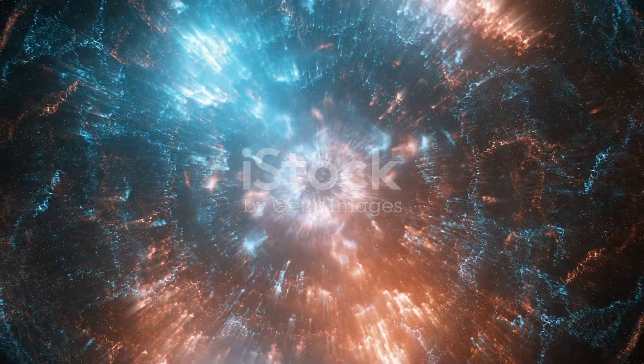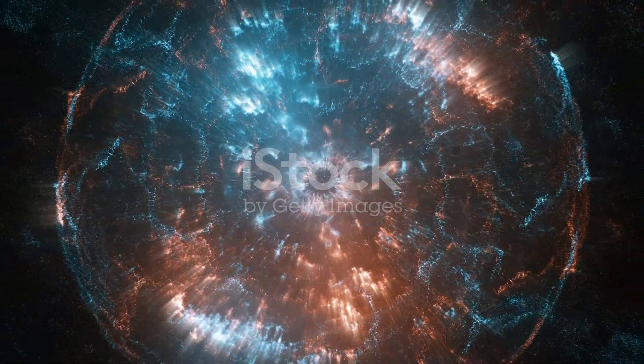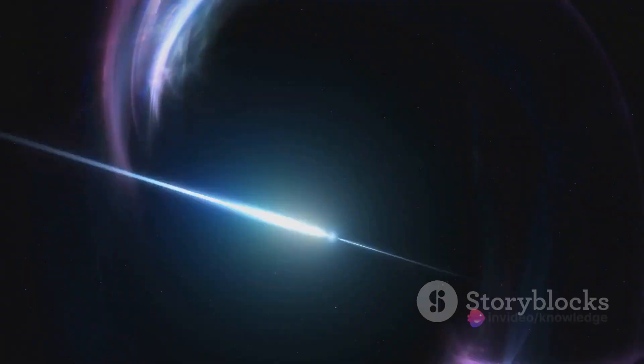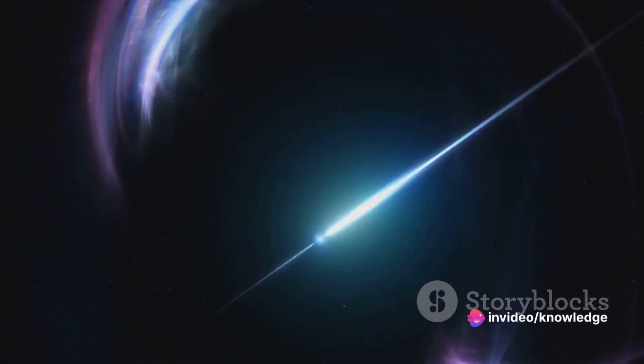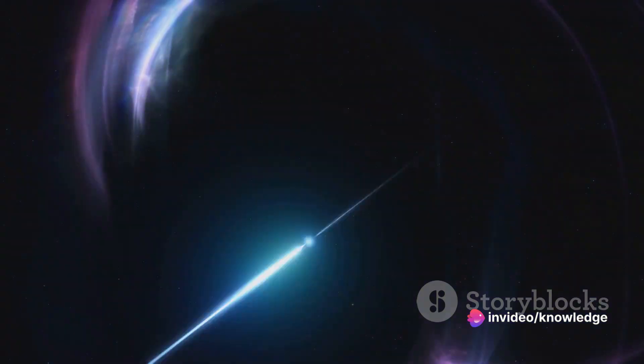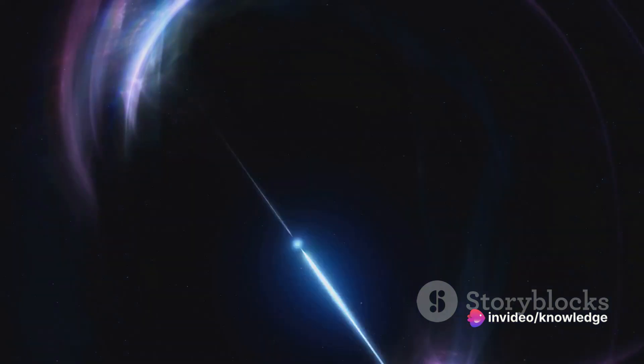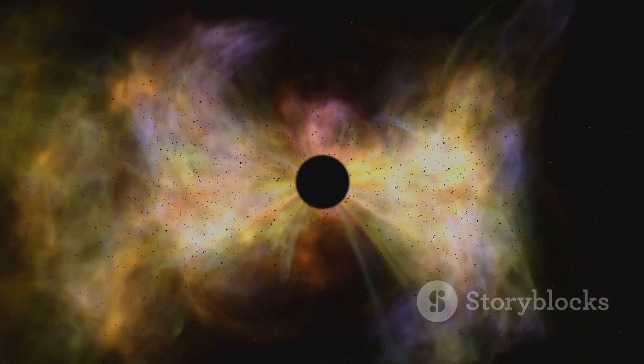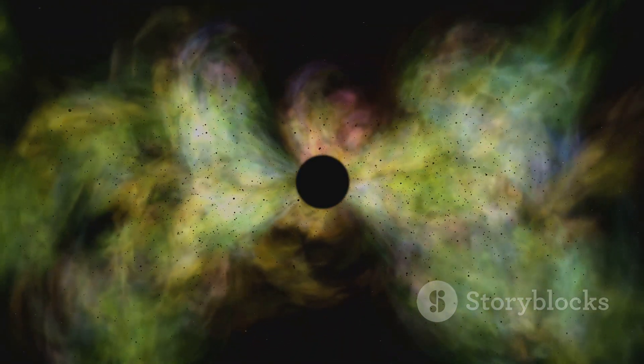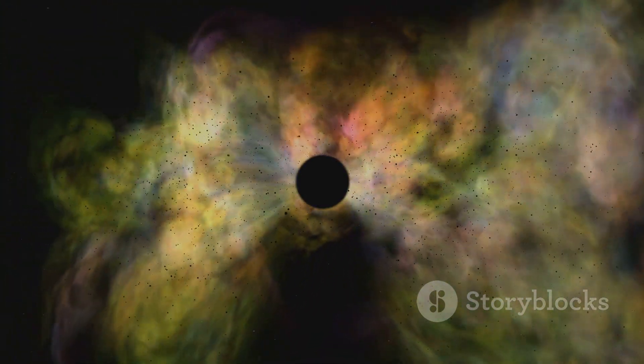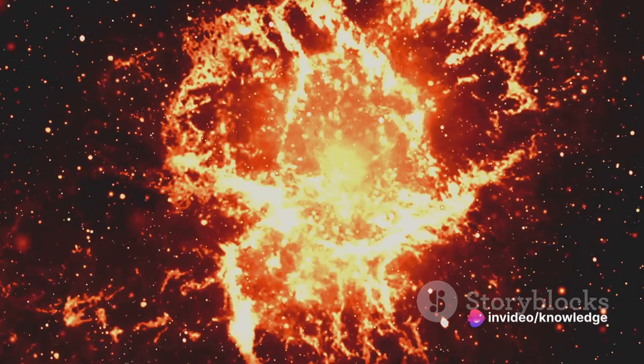Now, this is where things get a bit tricky. You see, the core eventually becomes so dense and hot that it can no longer support the weight of the outer layers. And then, it happens. The core collapses. This isn't a slow, gradual process either. The core's collapse happens in a matter of seconds, creating a neutron star or in some cases a black hole.